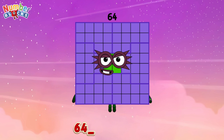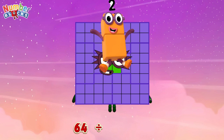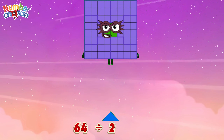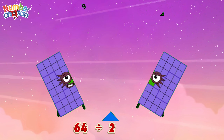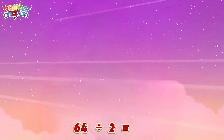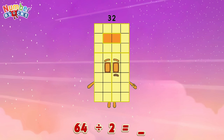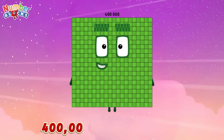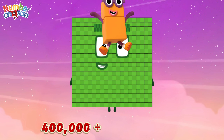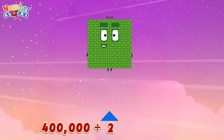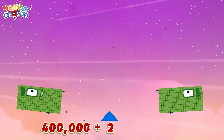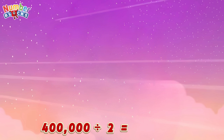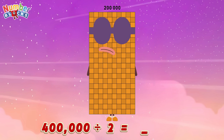64 divided by 2 is equals 32. 400,000 divided by 2 is equals 200,000.